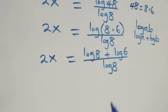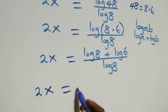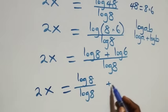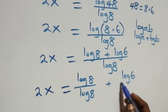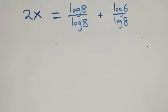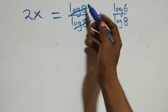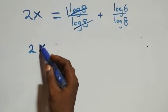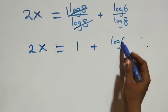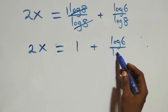We separate this into two fractions: 2x equals log 8 over log 8 plus log 6 over log 8. The log 8 terms cancel each other, leaving 1, so we have 2x equals 1 plus log 6 over log 8.